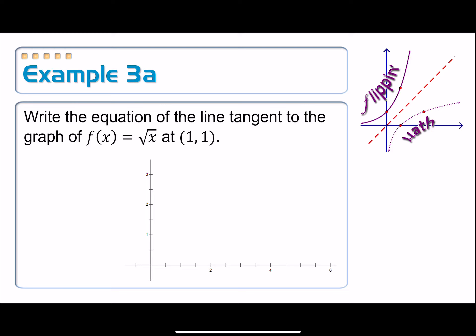Example 3a. Write the equation of the tangent line to the graph of f(x) = √x at (1, 1). Alright, square root function, we know it looks sort of like this, right?